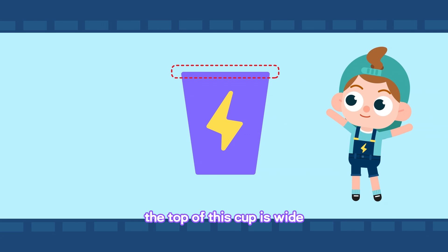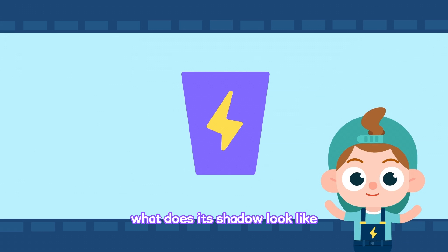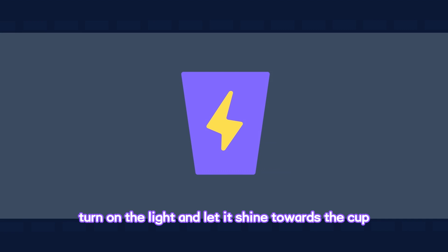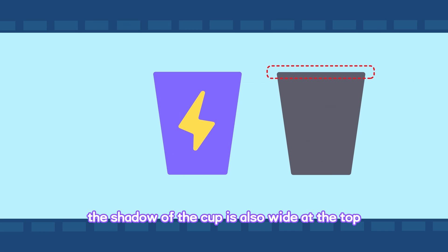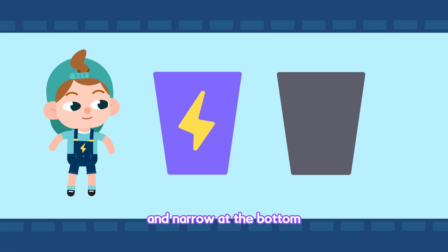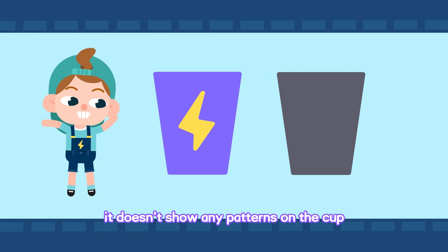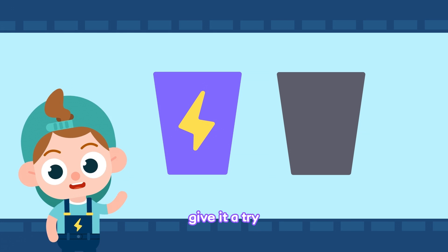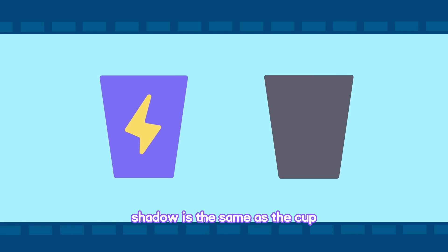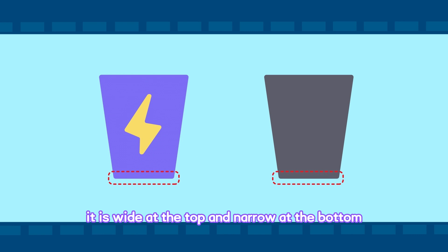Look, the top of this cup is wide and the bottom is narrow. What does its shadow look like? Turn on the light and let it shine towards the cup. The shadow of the cup is also wide at the top and narrow at the bottom. The shadow only shows the shape of the cup — it doesn't show any patterns on the cup. Give it a try! The shadow is the same as the cup: wide at the top and narrow at the bottom.